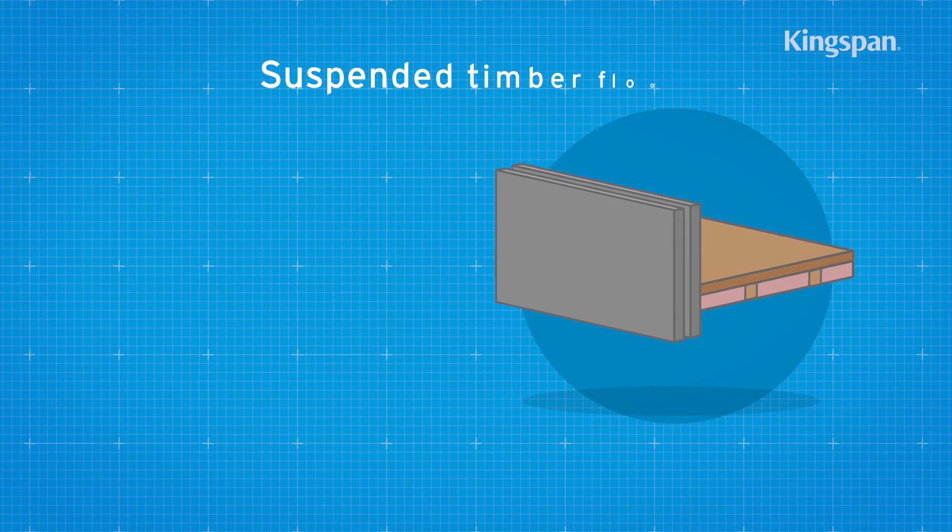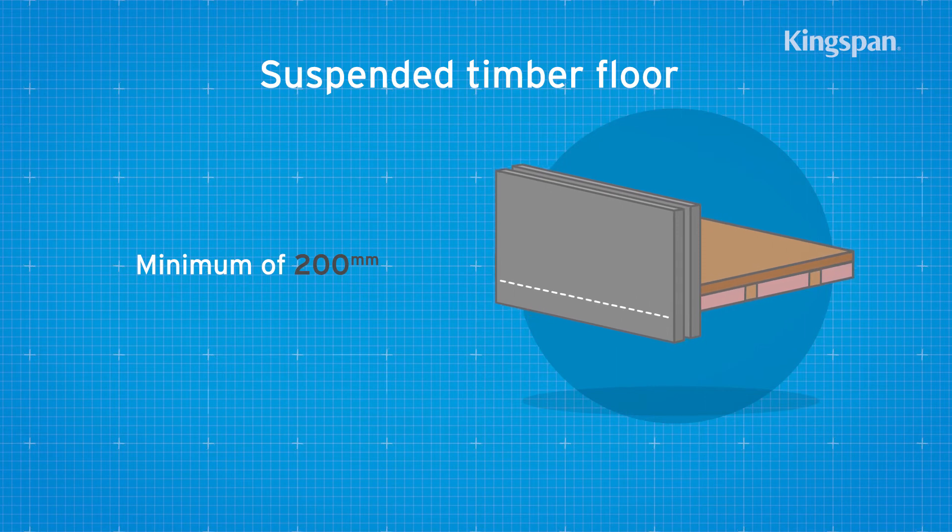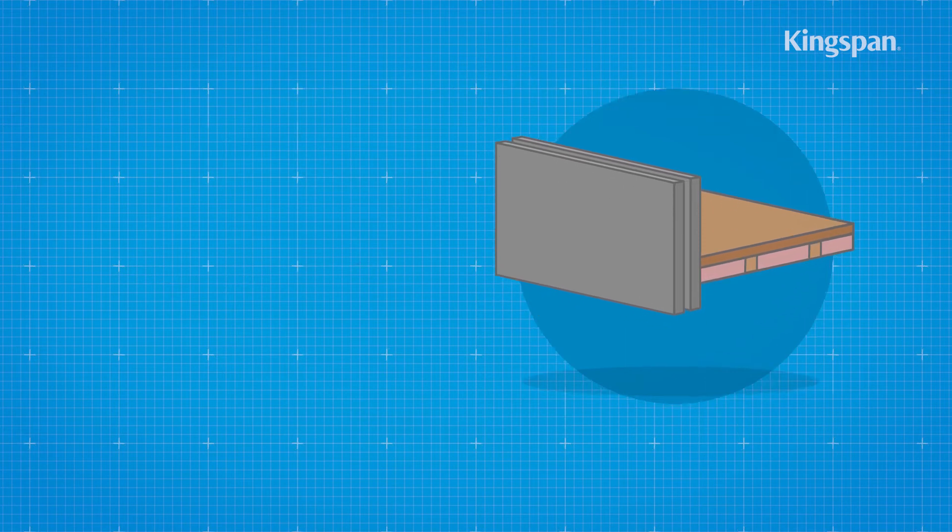For suspended timber floors, wall ties start a minimum of 200 mm below the top surface of the ground floor perimeter insulation upstand.